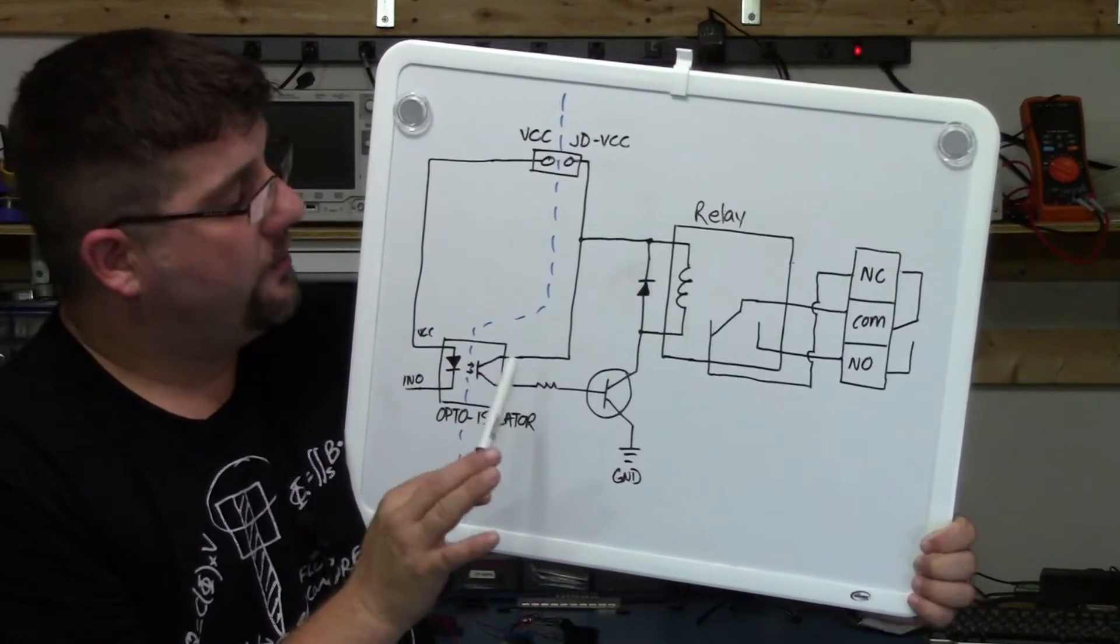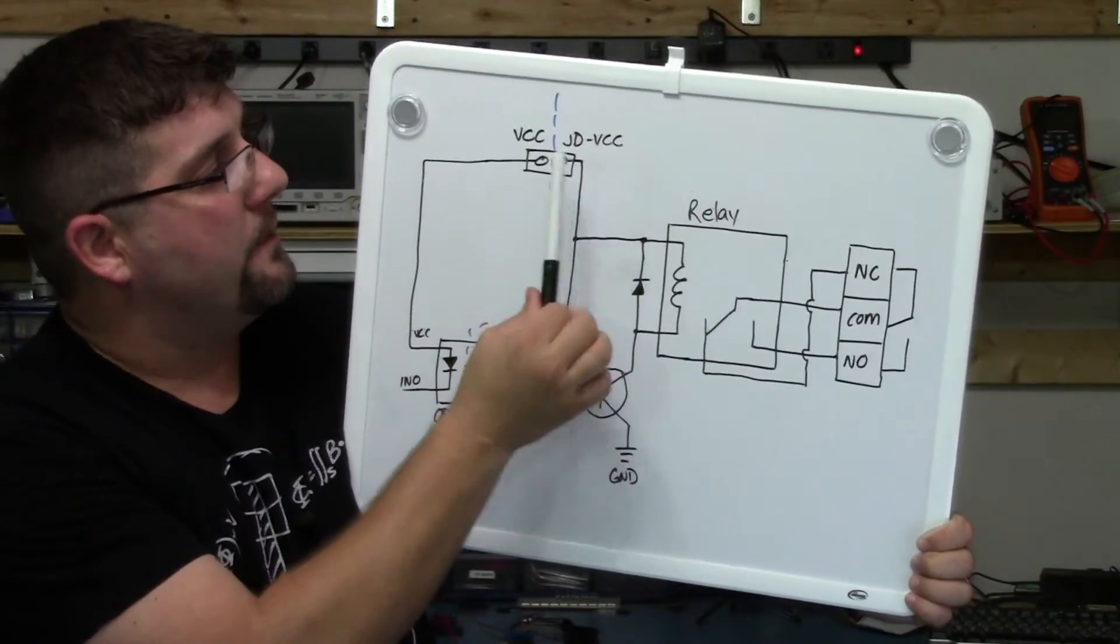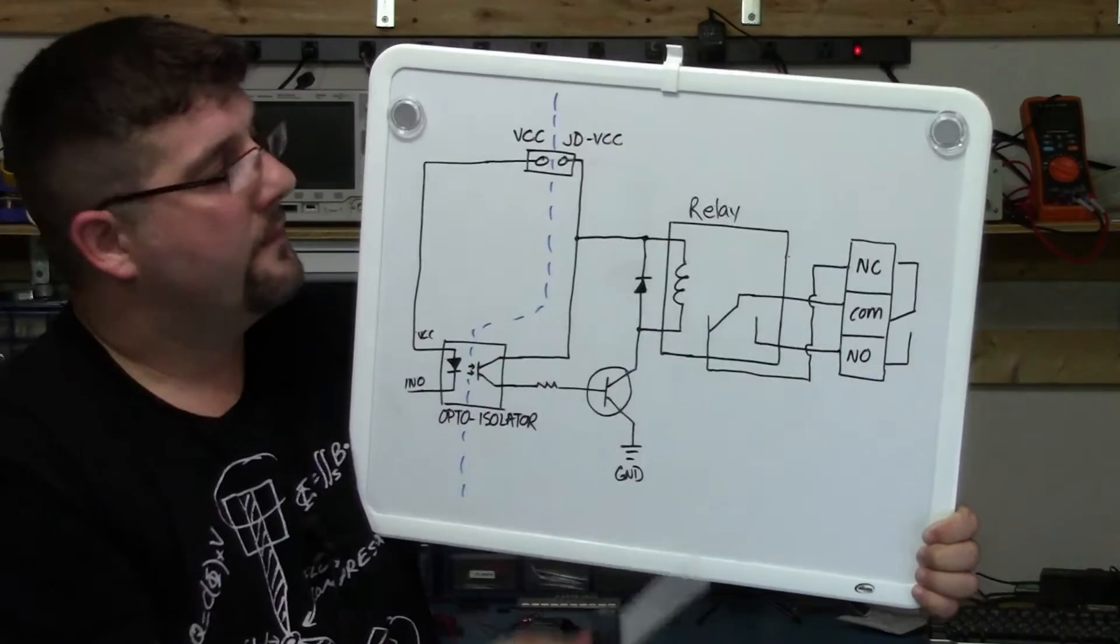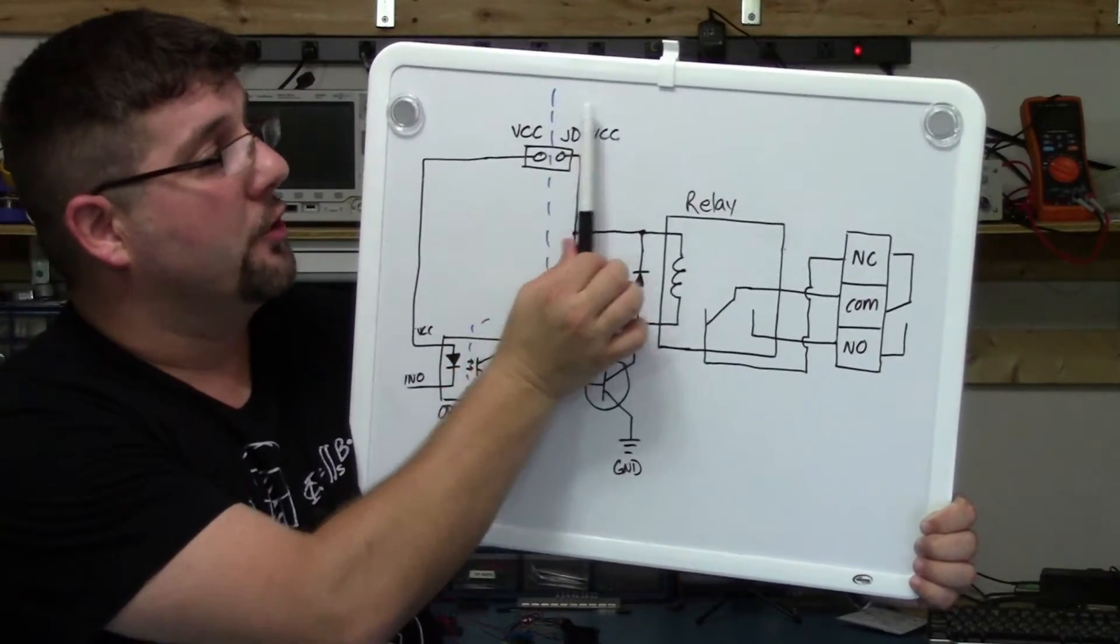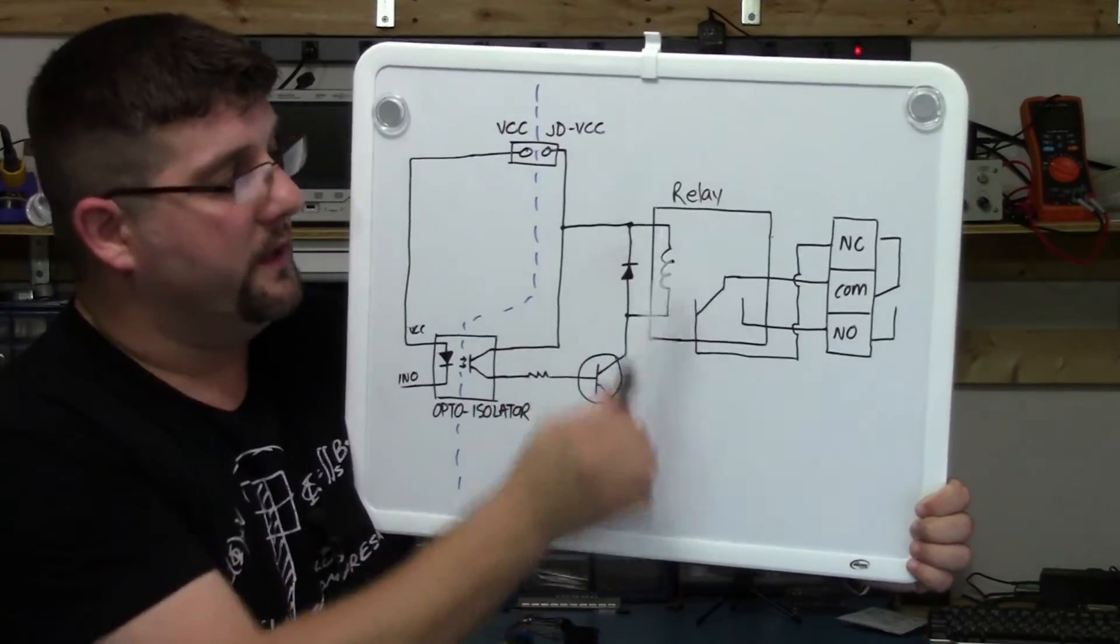So if you want to isolate your Arduino or your control circuitry, you want to remove that jumper. We want to separate VCC and JDVCC. Now what that will do is force us to have an external power source, an external 5 volts to drive this relay circuit.